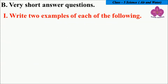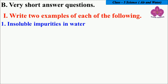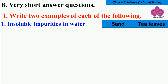Next, write two examples of each of the following. For each statement you need to give two examples. First, insoluble impurities in water — what are the insoluble impurities in water? You can give any two examples. The answer is Sand and Tea leaves.